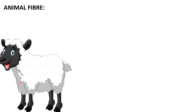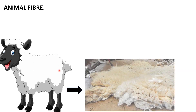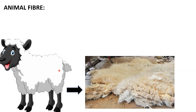Now let us look at animal fiber in brief. Taking the example of sheep, you can see there is a thick layer of hair covering the sheep. This thick layer of hair is removed — shaved off — from the body of the sheep, and this hair is called fleece.